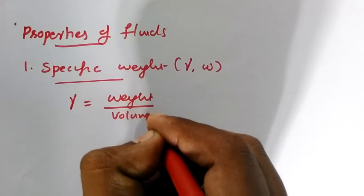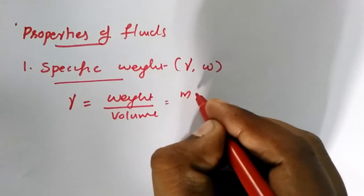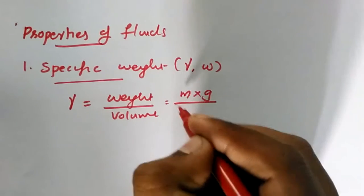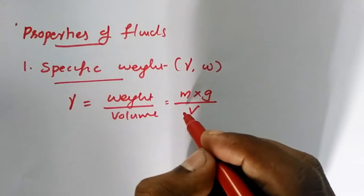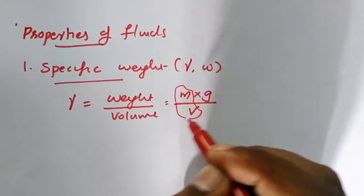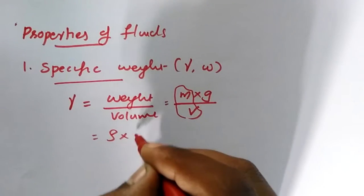That ratio of weight and the volume. We know that weight is equal to mass into acceleration due to gravity, and volume is V. Then again we know that mass by volume, this is density rho, so specific weight equals rho into g.